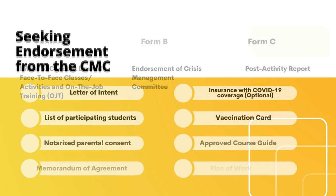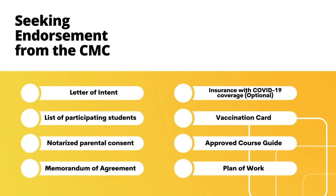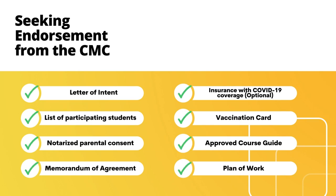The requirements are as follows: Letter of Intent from the Faculty Member addressed to the Office of the President; List of Participating Students with their Email Addresses; Notarized Parental Consent of the Students; Proof of Insurance with COVID-19 Coverage of the Students (Optional); Proof of Full Vaccination of the Students and Faculty Member; Approved Course Guide for Category 2 and 3; and Plan of Work for Co-Curricular and Extracurricular Activity.